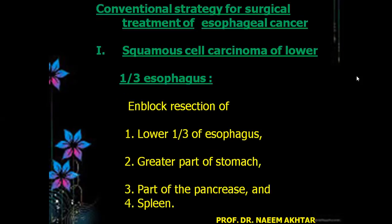Conventional strategy for surgical treatment of esophageal cancer: if the cancer involves the lower one third of the esophagus and it is adenocarcinoma, in that case en bloc resection of the lower one third of the esophagus plus the greater part of the stomach plus part of the pancreas and spleen.